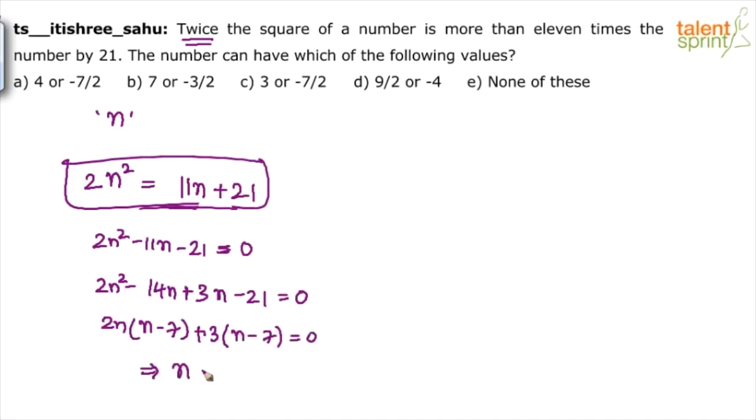So what are the values of N? N will either be equal to 7 or minus 3 by 2. 7 or minus 3 by 2, option B is the answer.